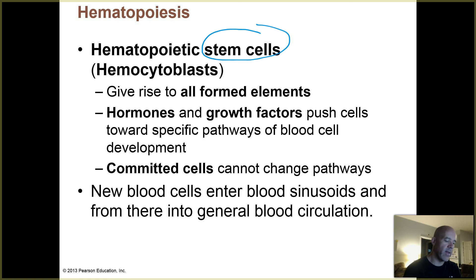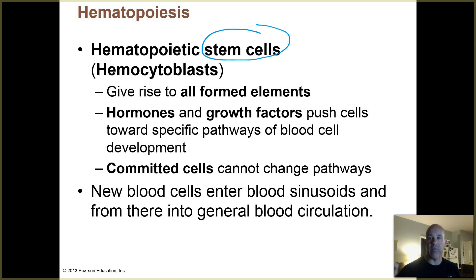A stem cell is basically a non-specialized cell that, as it divides over and over again, can become different types of cells. Our bodies contain various kinds of stem cells. Some are more limited — for example, skin stem cells can recreate many of the structures in the skin when you get burned or injured, but they can't become heart cells, muscle cells, or neurons. In your red bone marrow, you have stem cells that haven't specialized into anything yet, but have the capability of turning into all of these different types of formed elements.